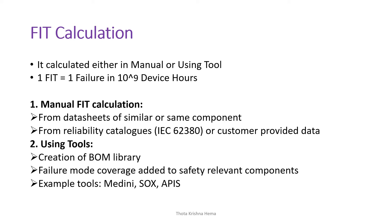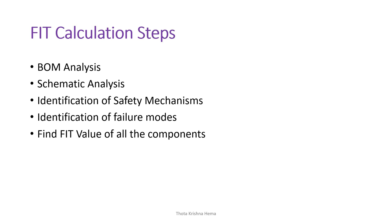Using tools involves creation of a BOM library — a bill of material library — with failure mode coverage added to safety-relevant components. Some examples of these tools are Medini Access, Sourcery, and EPICS. The important steps in FIT calculation include BOM analysis, design schematic analysis, identification of safety mechanisms, identification of failure modes, and finding FIT values for all components inside the hardware architecture.